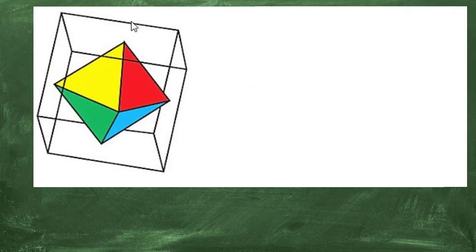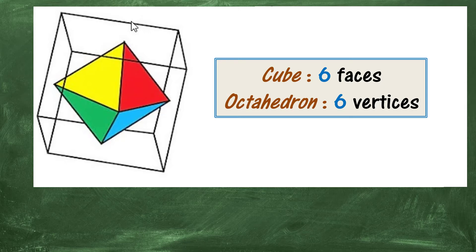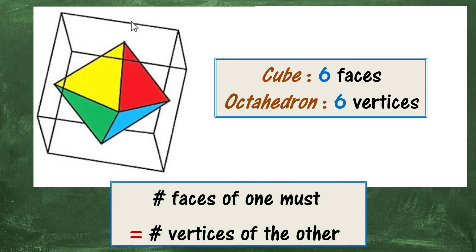Here we have a cube and the centre of each of its faces is joined to form an octahedron. And this is possible because the cube has six faces and the octahedron has six vertices. So to do this the faces of one must equal the vertices of the other.